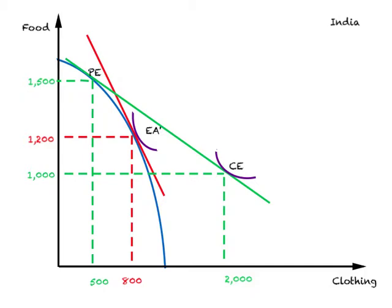Once again, observe the same findings as for the U.S. The community indifference curve under free trade is further from the origin relative to autarky, meaning the welfare of citizens of India has increased with free trade. And because we have the increasing cost principle, India continues to produce both food and clothing even under free trade.